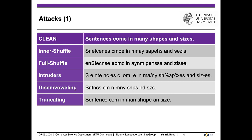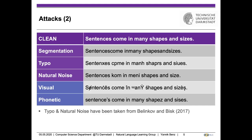The third attacker is the intruder attacker. Here we insert unobtrusive symbols in words — a typical phenomenon in social media, e.g. to avoid censorship. The fourth attacker is the disenvowelling attacker. Here we remove all vowels from a word; if a word only consists of vowels, it will be ignored to prevent it from being deleted. Disenvowelling is a common feature of SMS language and on social media, presumed to require little cognitive effort for humans. The fifth attack is the truncating attack, which removes a fixed number of letters from the back of a word — predicting word endings from the beginning is considered an easy task for humans.